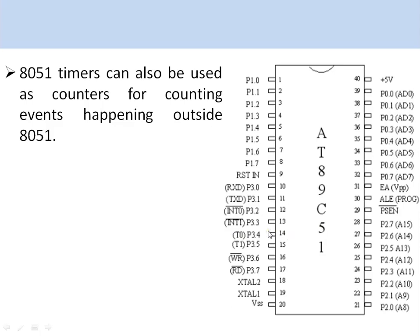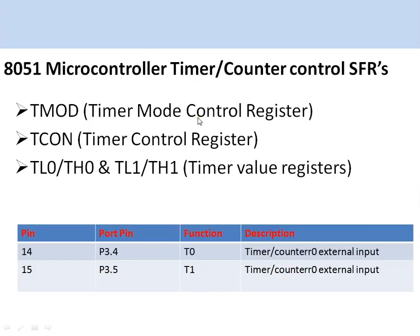The microcontroller timer and counter special function registers are the TMOD register and the Timer Control register, along with TL0, TH0, TL1, and TH1. These register values increment depending upon the value coming from external events when configured as a counter, and they increment from the internal crystal when configured as a timer. Pins 14 and 15 of the microcontroller are used for connection to the external application.